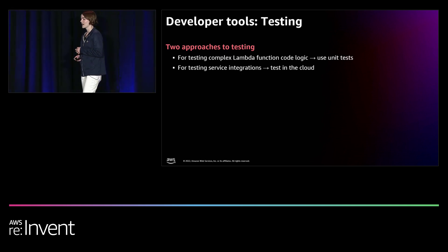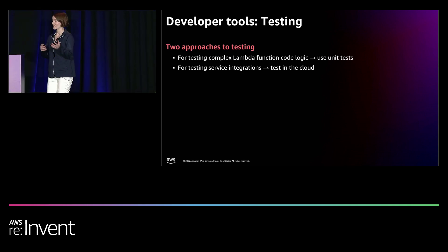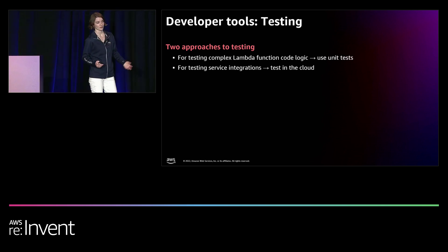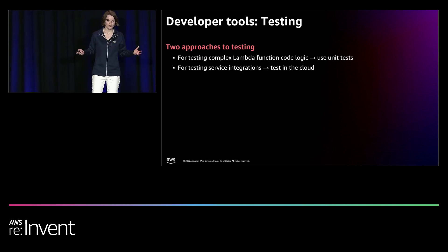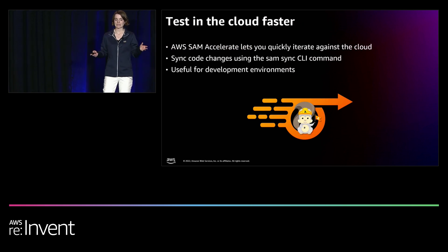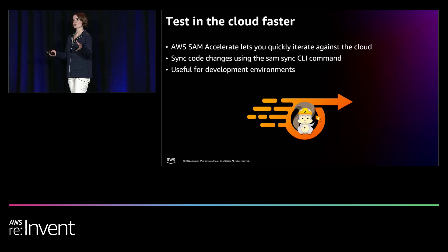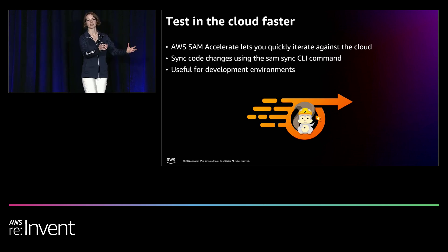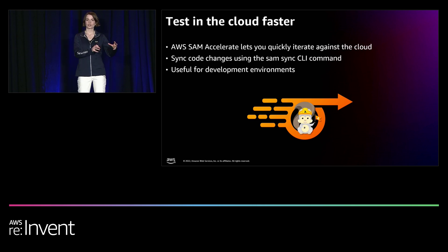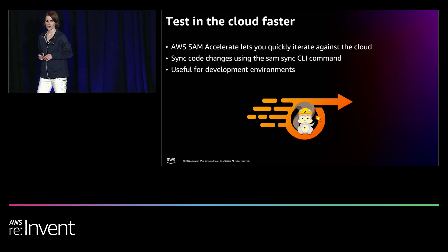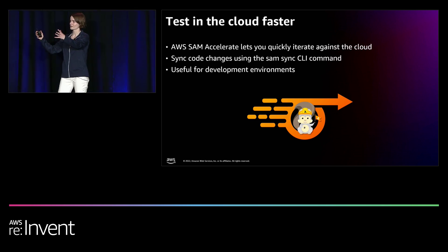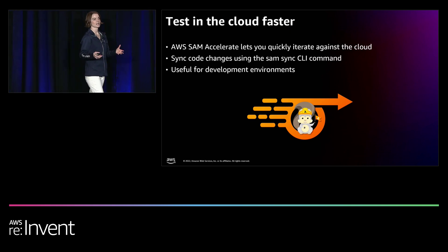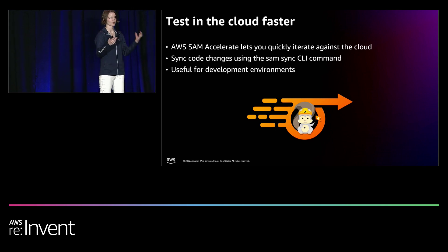One thing people run into while testing in the cloud is that as the application grows, it can take a couple of minutes for a full deployment to update all resources. We created a tool to help with that: SAM Accelerate. With SAM Accelerate, the CLI command `sam sync` lets you take your function code and sync it directly to the cloud without waiting for a full build. Reserve this for development environments since it can create some drift, but it's a really nice way to quickly get new code into the cloud and start testing against real live AWS services.